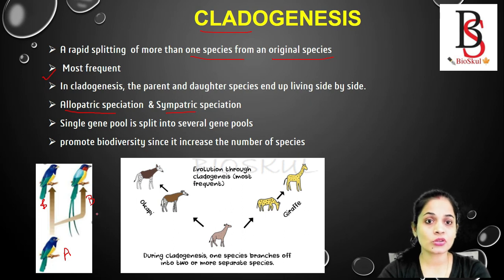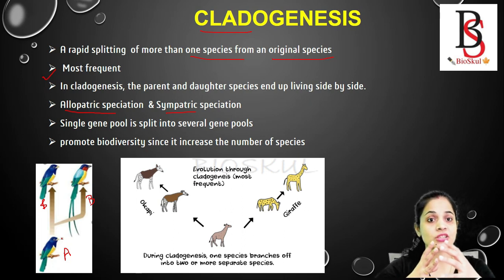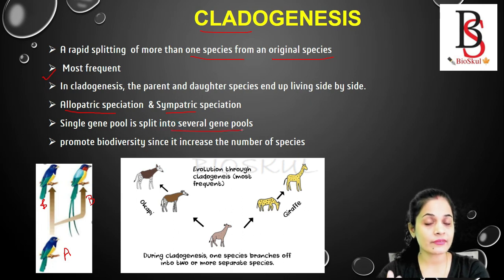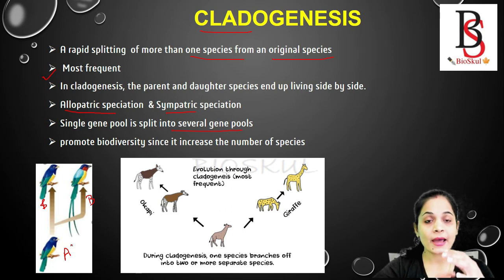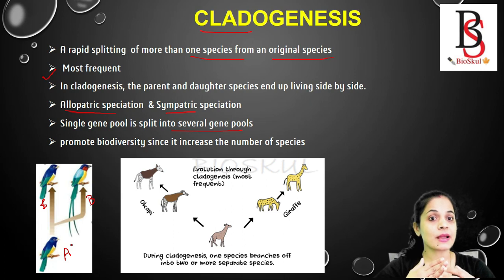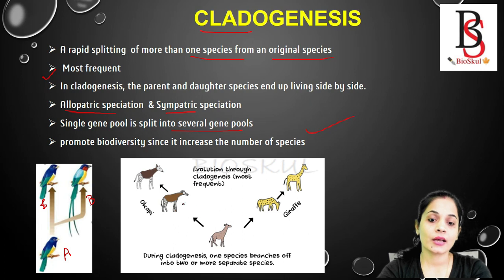Regarding the gene pool in cladogenesis: one gene pool does not change into another gene pool, but instead the one gene pool is split into more than one gene pool. The parent species and daughter species are present side by side, which means the cladogenesis pattern of evolution promotes biodiversity, as the number of organisms is also increasing.